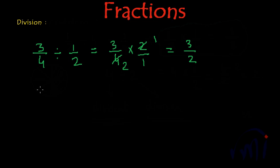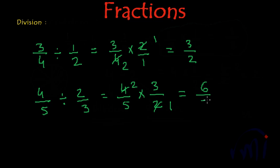Or suppose you have a fraction like 4 by 5 divided by 2 by 3. This will be equal to 4 by 5 multiplied by inverse of 2 by 3 which will be 3 by 2. 2 times 1 is 2, 2 times 2 is 4, 3 multiplied by 2 will give you 6 divided by 5.